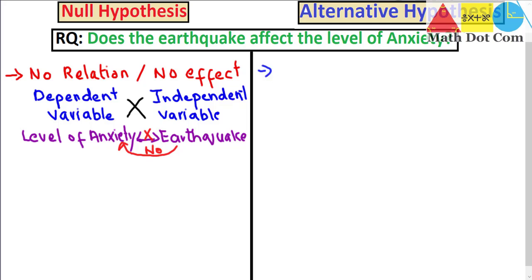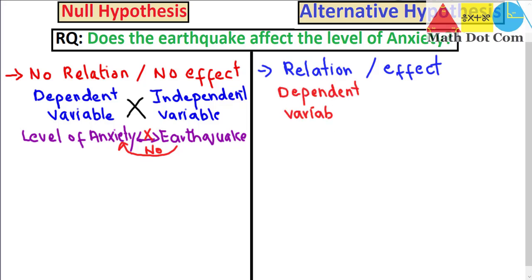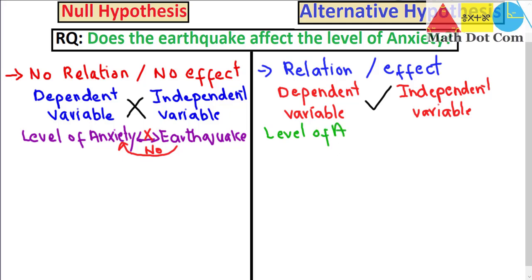The alternative hypothesis is always related to the null hypothesis, but as its name indicates, it is the opposite of the null hypothesis. If there is no relation in the null hypothesis, in the alternative hypothesis we will have a relation — an impact or effect of some phenomenon. So in the alternative hypothesis, the dependent and independent variables are related to each other. In our research question, the level of anxiety is related to and impacted by the earthquake.